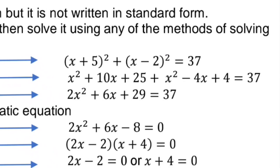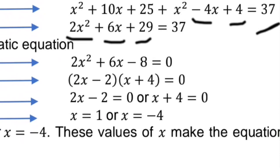For the second binomial: x minus 2 squared gives x squared, then negative 2 times x times 2 is negative 4x, then negative 2 squared is 4. Simplifying both together: x squared plus x squared is 2x squared, 10x minus 4x is 6x, and 25 plus 4 is 29. So 2x squared plus 6x plus 29 equals 37. Transpose 37 to the left side: 29 minus 37 is negative 8. So 2x squared plus 6x minus 8 equals 0.